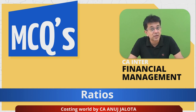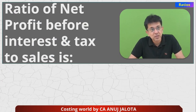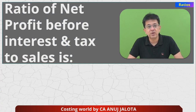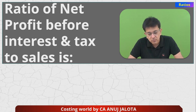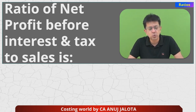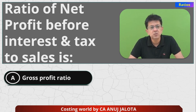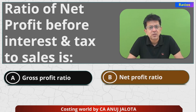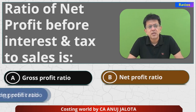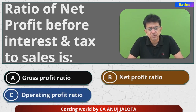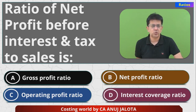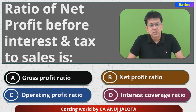Let's look at today's MCQs — these are of great use, provided you try to comment whenever we ask questions. The question is: ratio of net profit before interest and tax to sales is — Option A: gross profit ratio, Option B: net profit ratio, Option C: operating profit ratio, Option D: interest coverage ratio.